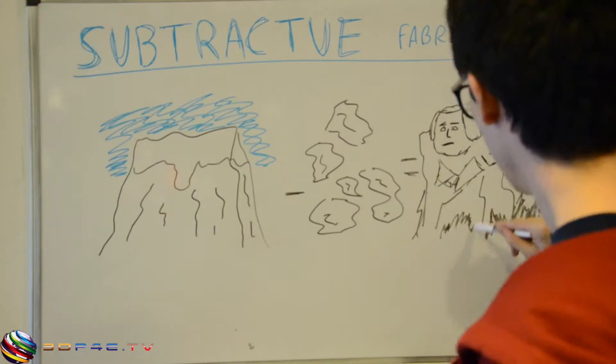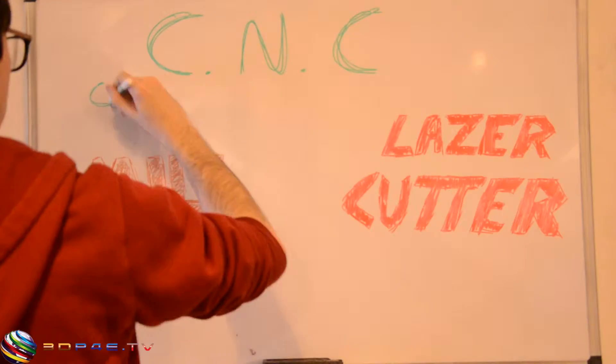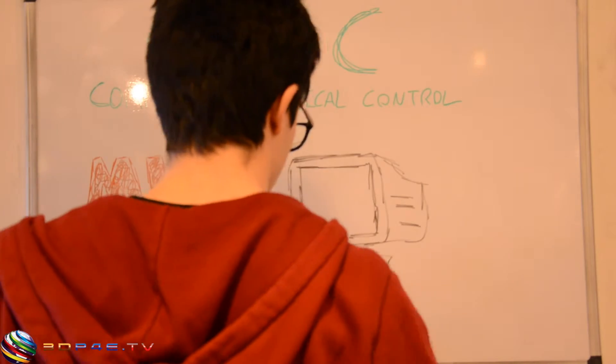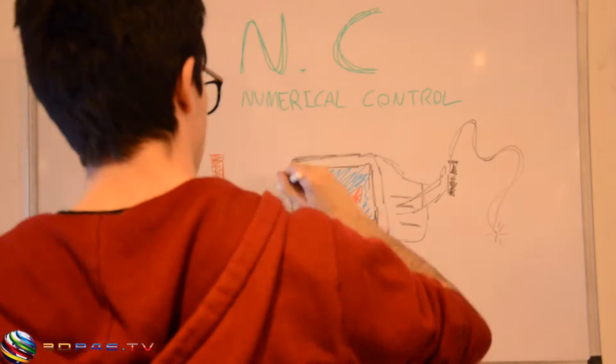By talking about the machines that use this process: CNC mills and laser cutters. CNC stands for computer numerical control, which basically means that these machines are guided by computers instead of human hands. The computer tells the machine what to do.